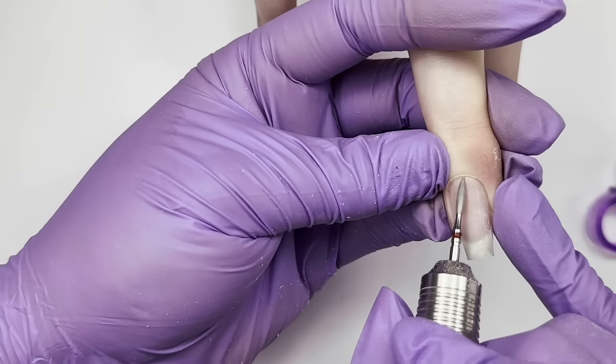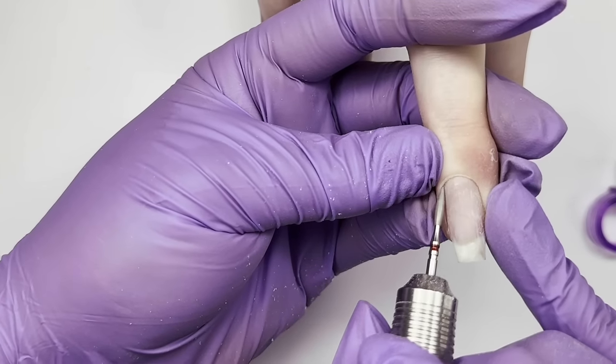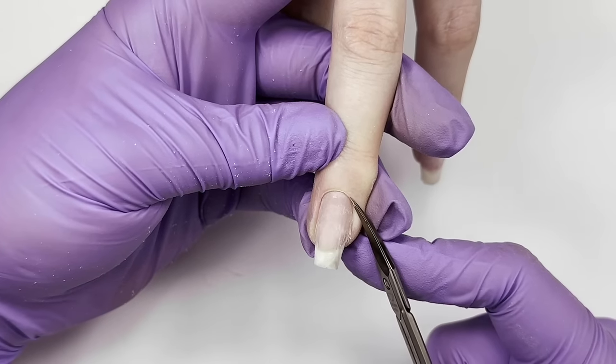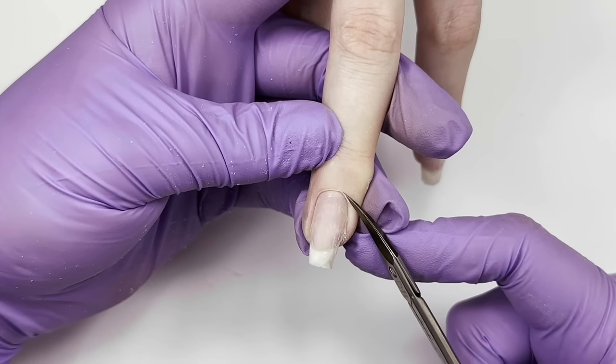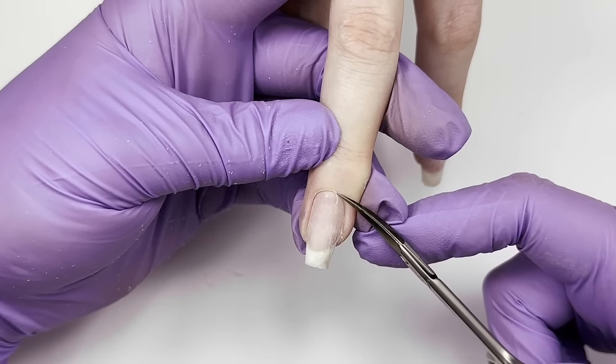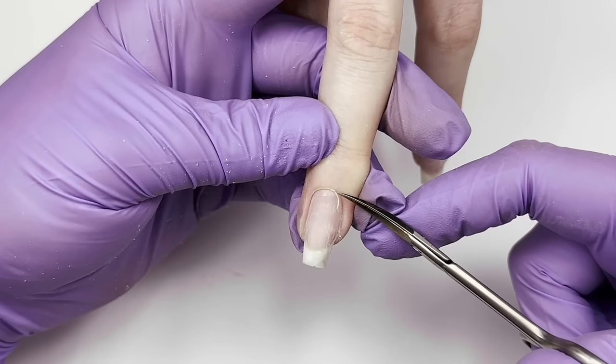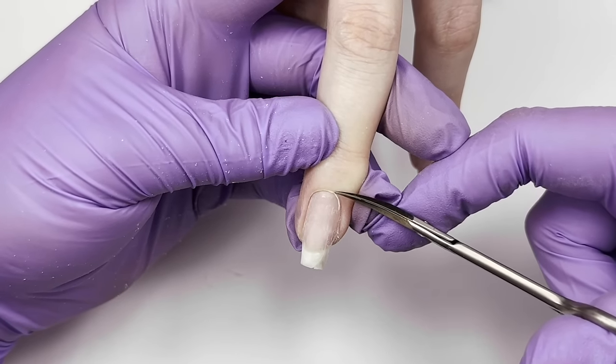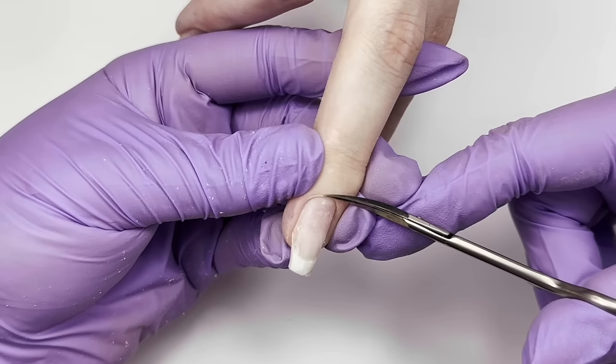Then we proceed with dry manicure. I'm using flame-shaped diamond bead. The speed is 15,000 rotations per minute. And then I trim the cuticles and eponychium and there's a tiny bead to trim at this point with the manicure scissors.